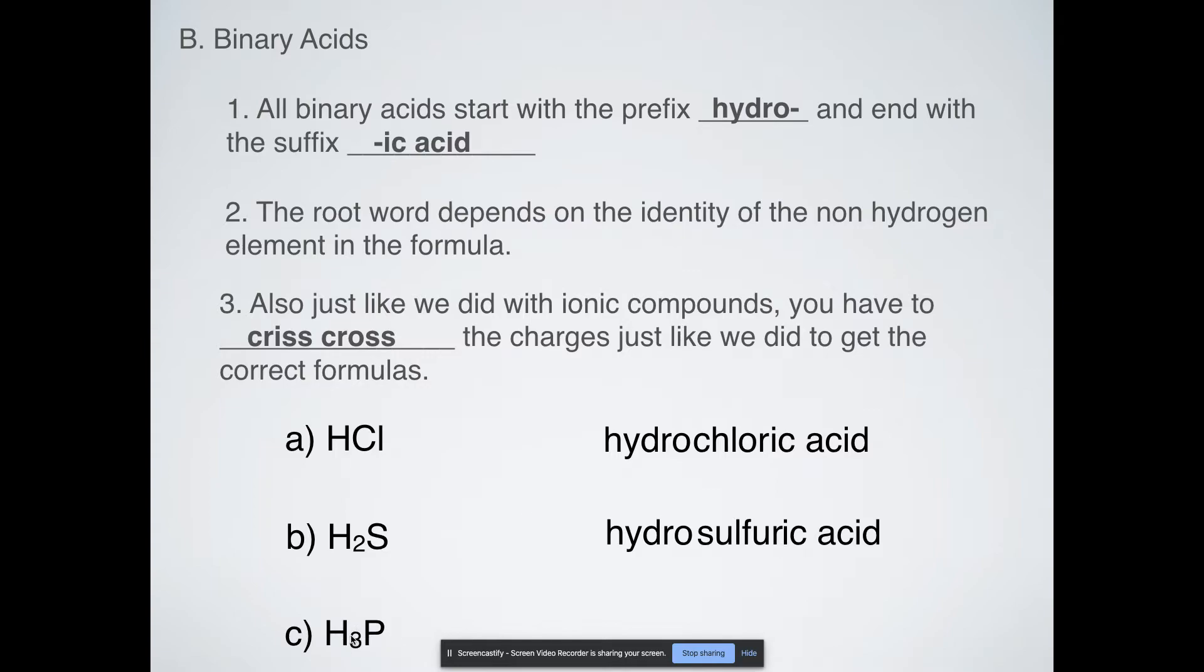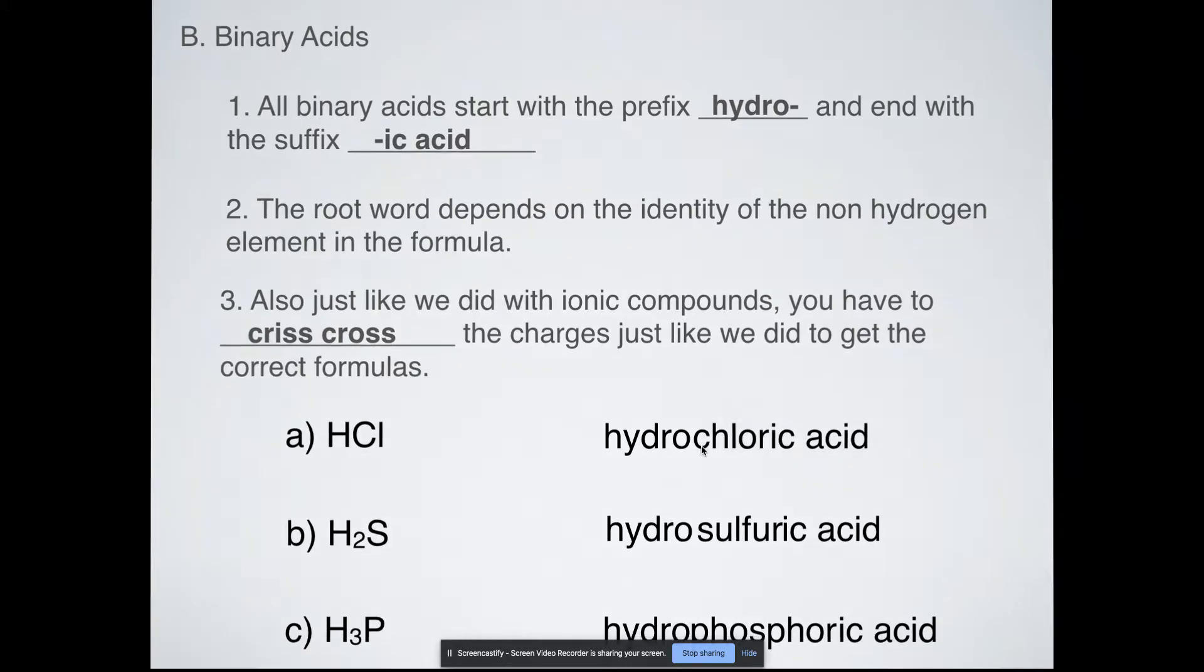Or this one, we have hydro-something-ic acid and I've got a P here. People would say okay, that's phosphorus. Are we going to take and drop the -us? And we do. It's hydrophosphoric acid. When you're actually naming these acids, I will probably be correcting your spelling for some of them just so that you have an idea of the root part that we take for these acids.